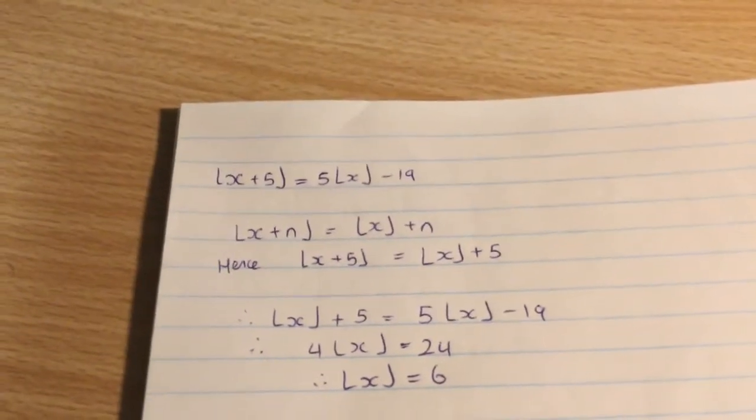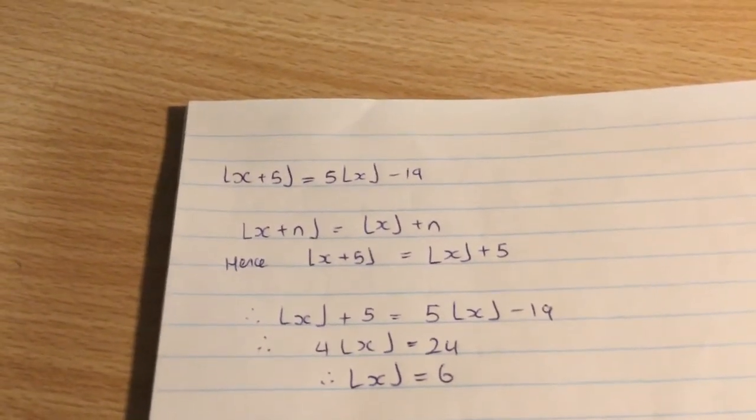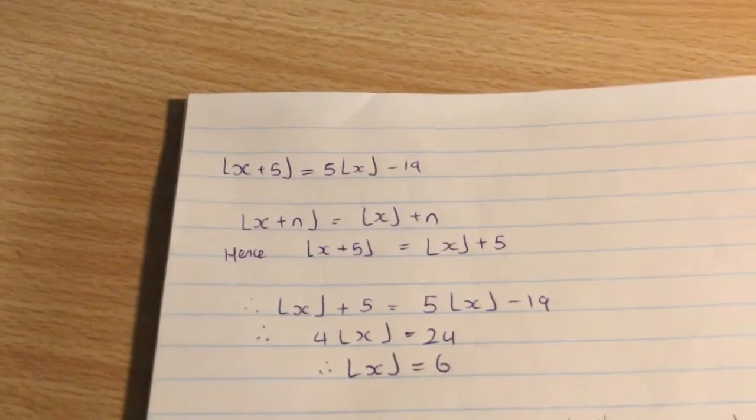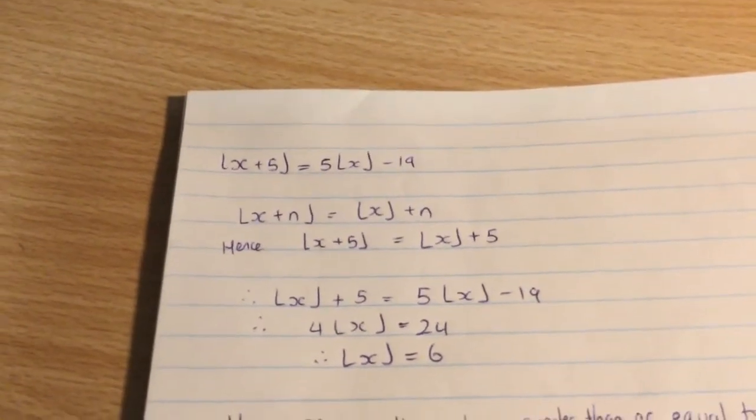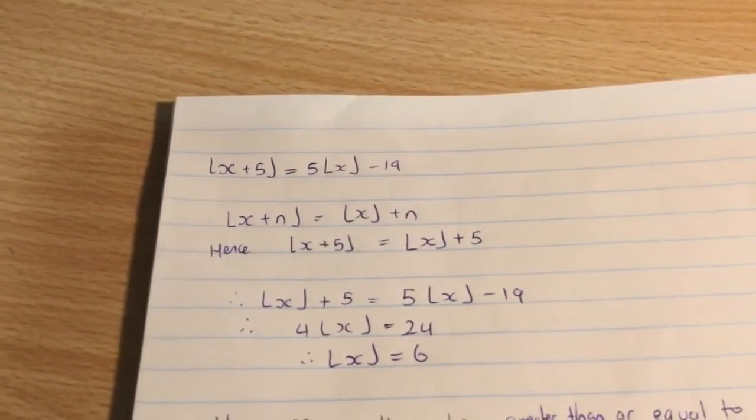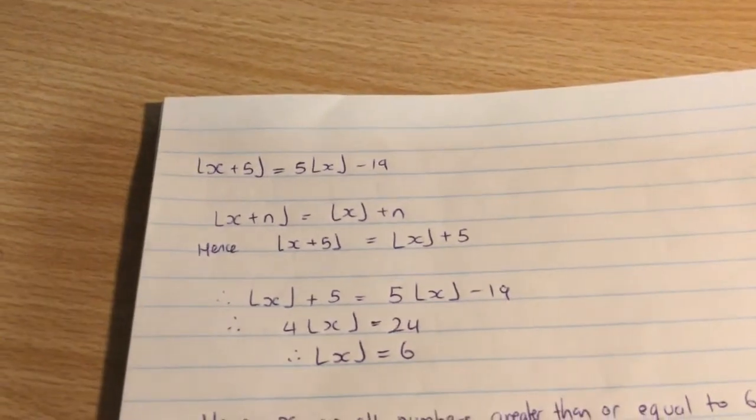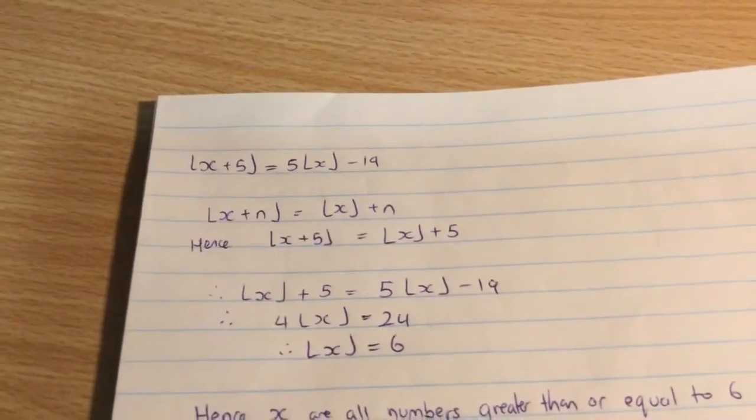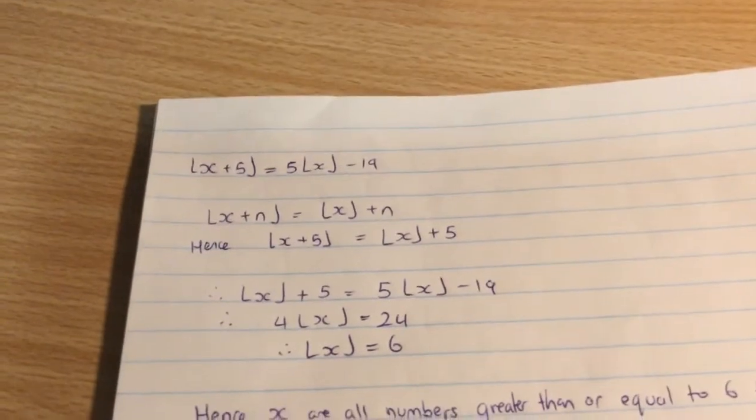But the first thing we're going to do is use the fact that if we have floor of x plus n, which obviously we have on the left hand side, we can write that as floor of x plus n, so we're separating out that constant there. So hence our floor of x plus 5 becomes floor of x and then plus 5.